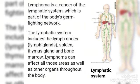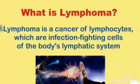The lymphatic system includes the lymph nodes, lymph glands, spleen, thymus gland, and bone marrow. Lymphoma can affect all those areas as well as other organs throughout the body. We can also say lymphoma is a cancer of lymphocytes, which are infection-fighting cells of the body's lymphatic system.